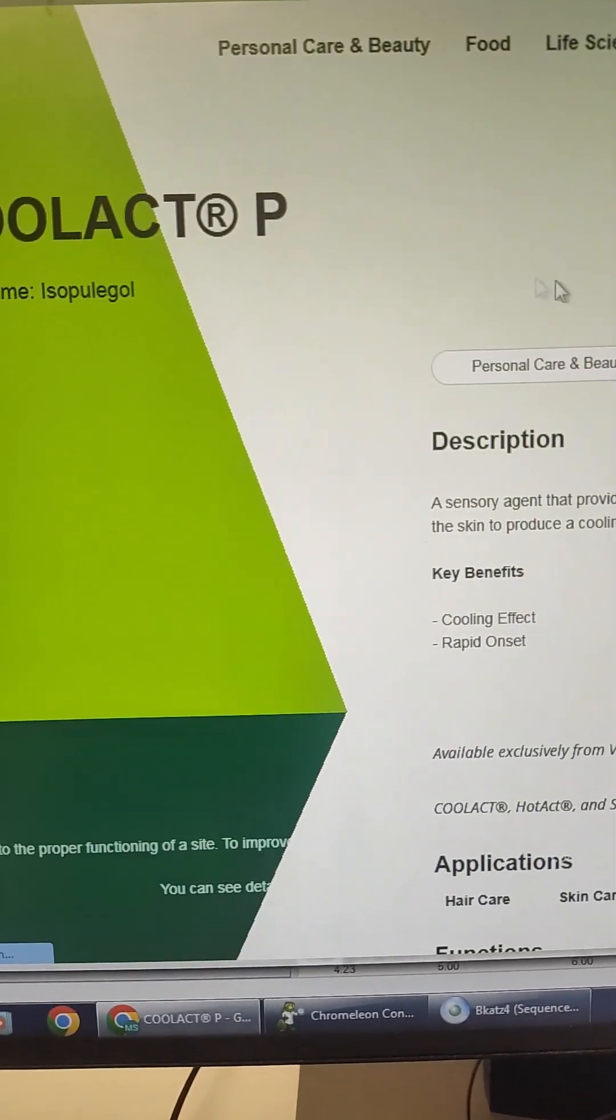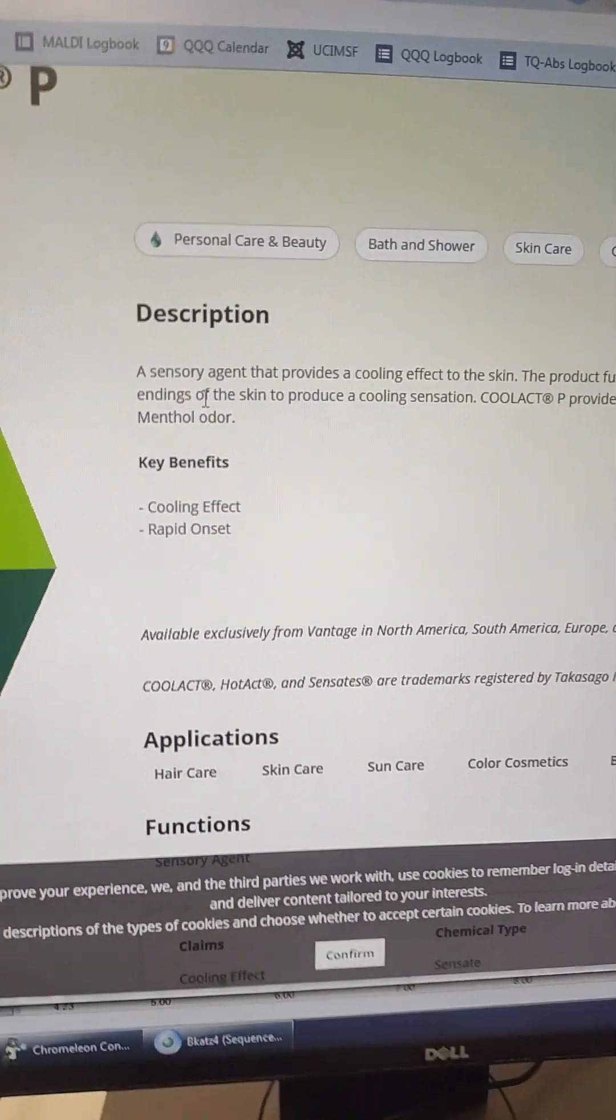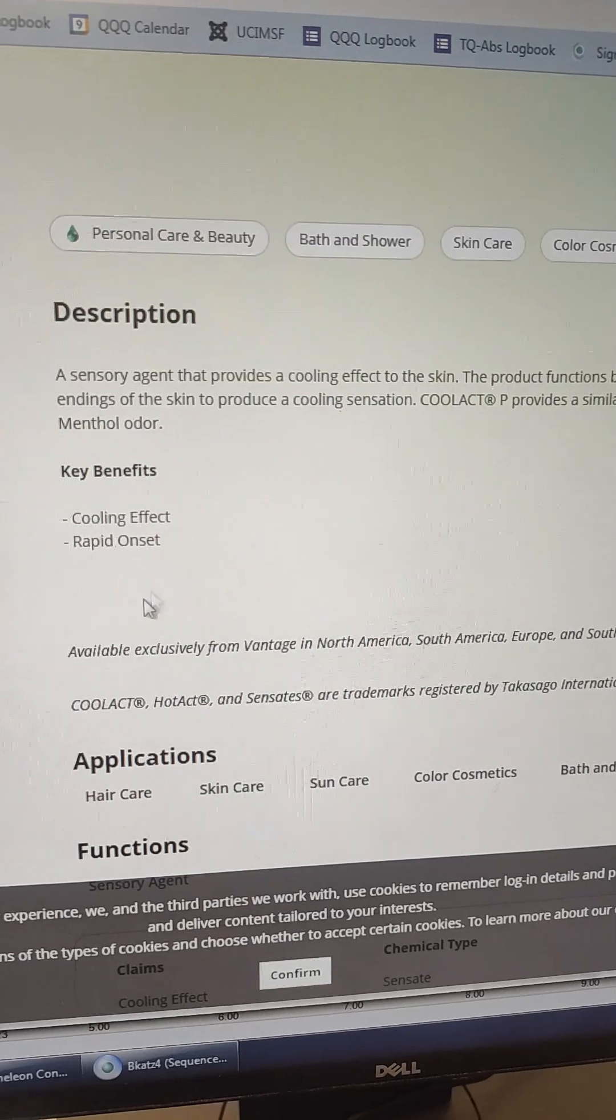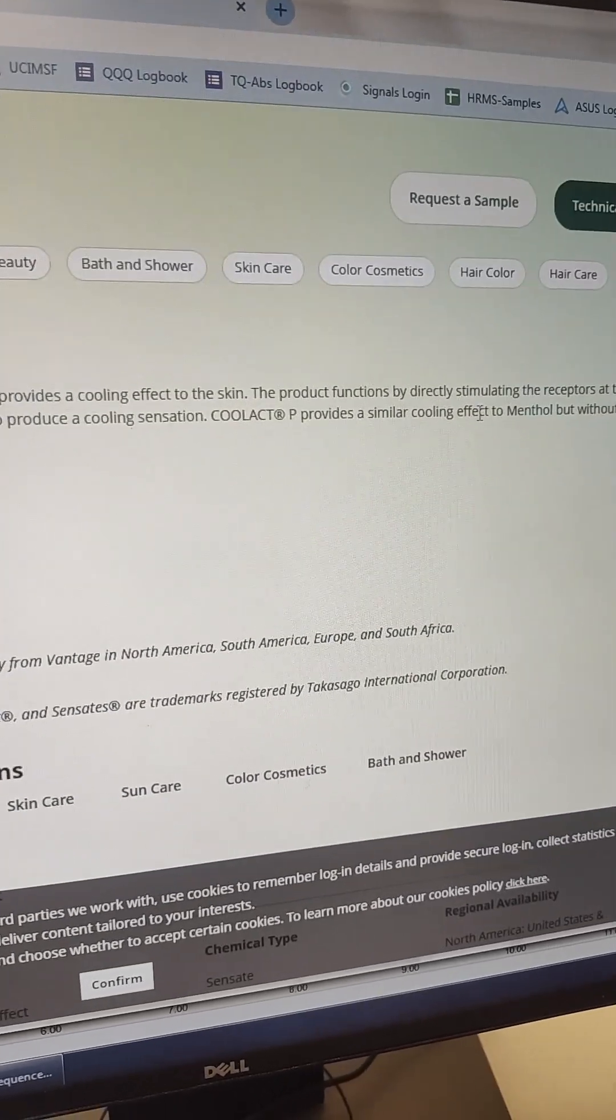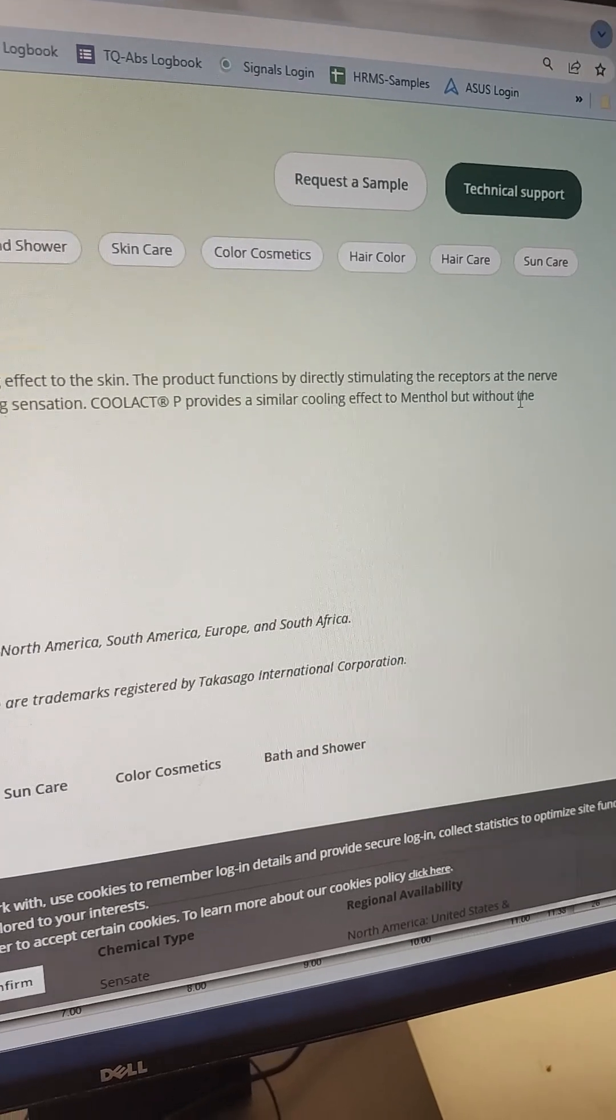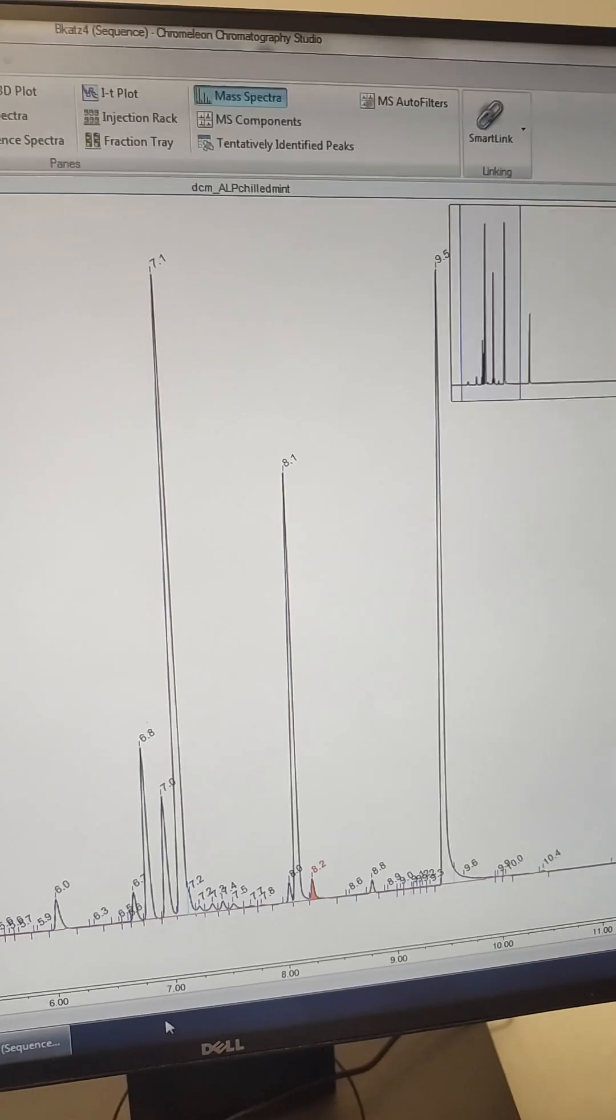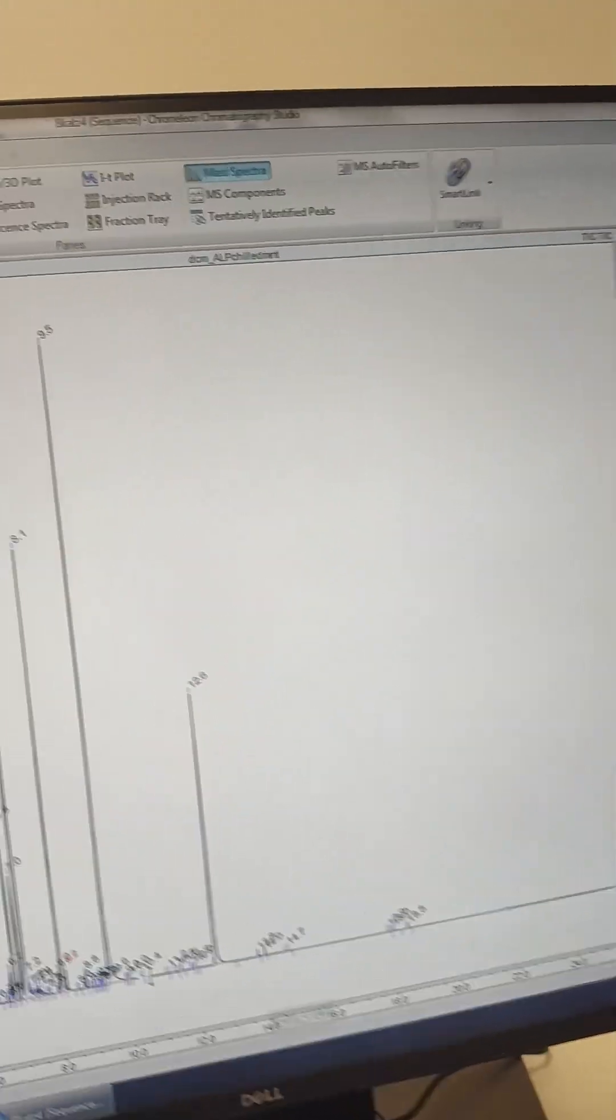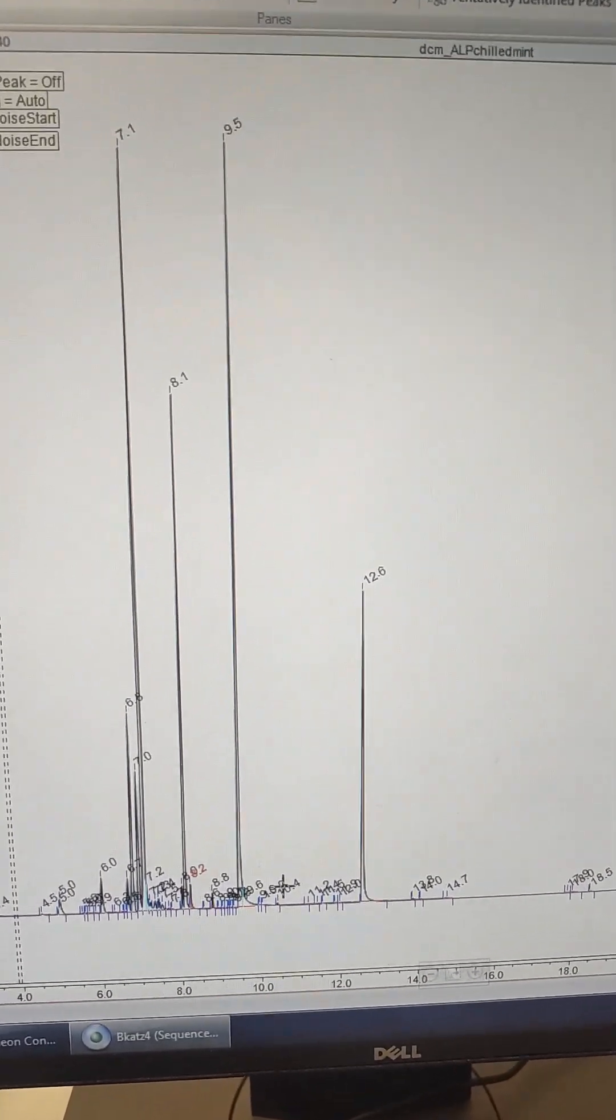From maybe Vantage Specialty Chemicals, and it has a rapid onset cooling effect. Rapid onset cooling effect, Cool Act P or Hot Act provides a cooling sensation similar to menthol but without the menthol odor. So yep, it's minty, it's cooling, I guess that's why they call it the Coolament. There's your ALP data. I'll run some more of the flavors when I get them.